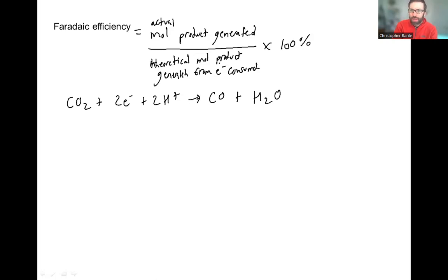So Faraday Efficiency is on an electron basis, right? So it's saying, hey, if we have one mole or two moles of electrons being transferred, however much charge that is, well, it's two times Faraday's constant, right? But if we have two moles of electrons being consumed in our electrochemistry, we better get one mole of CO being generated. That's what it's saying, according to the balanced reaction.